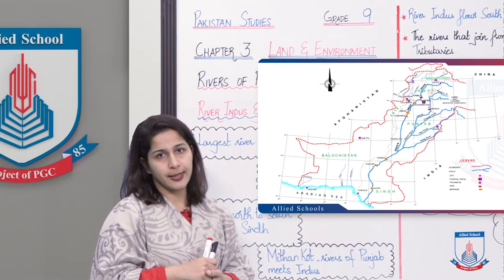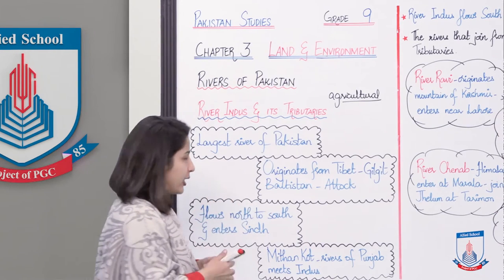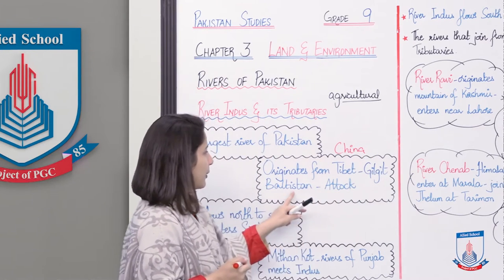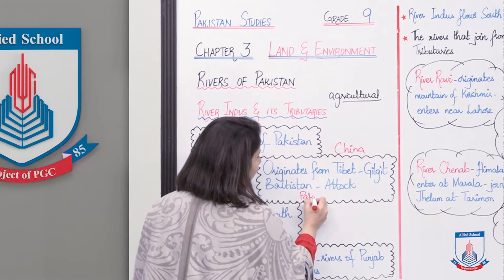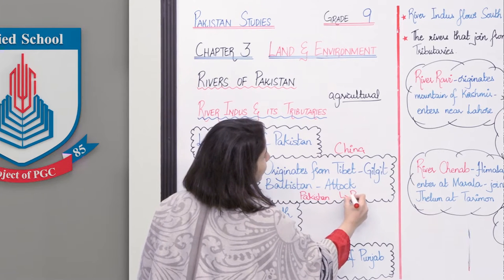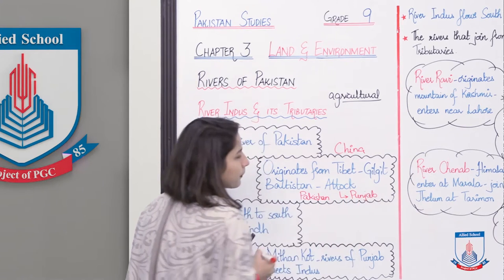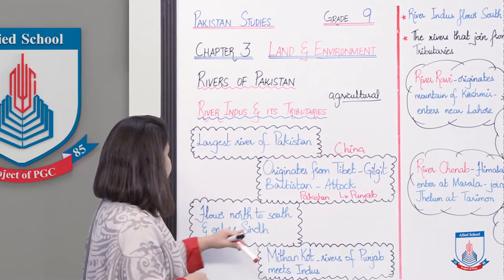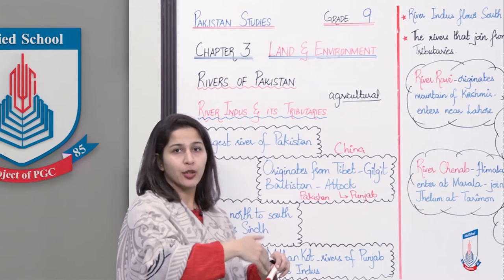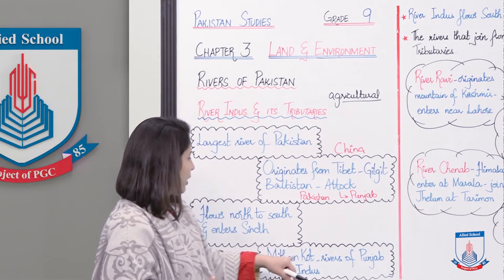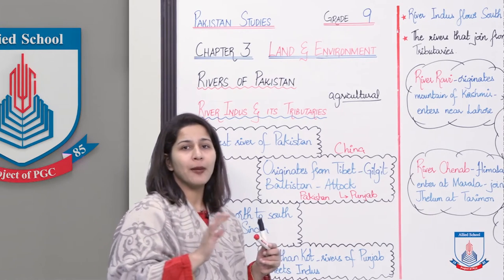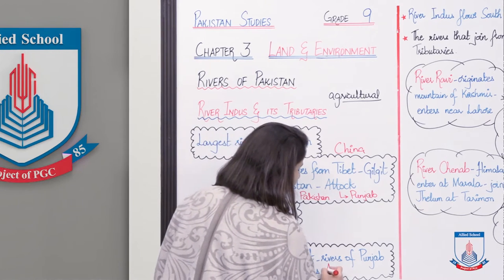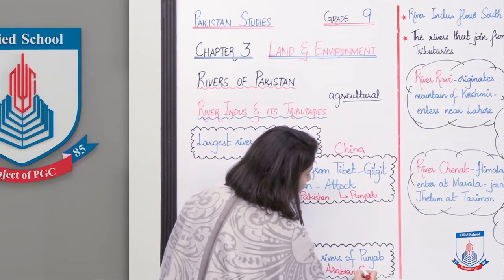The River Indus originates from Tibet, actually from China, and enters Pakistan at the point of Gilgit-Baltistan. Then at Attock, it enters the province of Punjab. The flow of River Indus is from north to south. It flows through Punjab and then enters Sindh. After entering Sindh, at Mithankot, it is the place where the other rivers of Punjab join the River Indus, and then they all end up in the Arabian Sea.